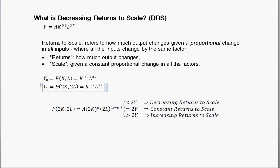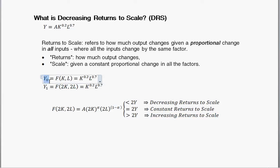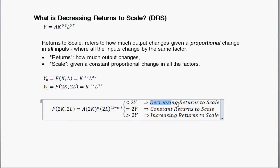If when we double the inputs we get more than double the initial, then we say that's increasing returns to scale. However, if we double the inputs and we get less than twice the original level of output, we'd call that decreasing returns to scale. And I'll show you that this production function right here is going to have decreasing returns to scale.